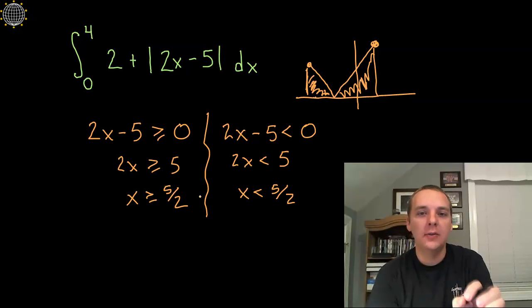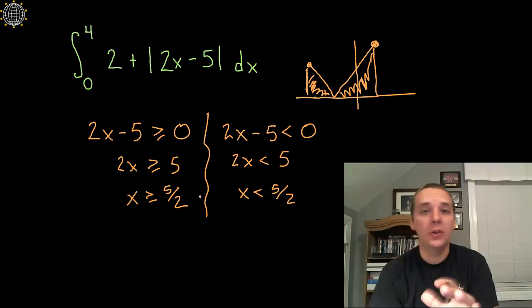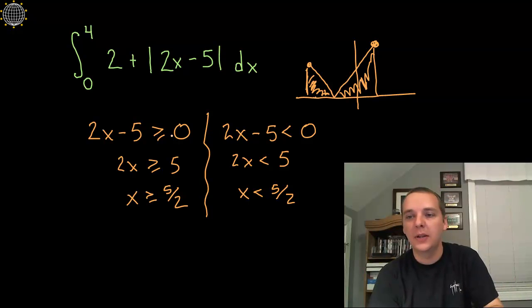Just knowing that the vertex is at 5 halves doesn't really tell us which, basically what to do with your new integrands, and so these will become more clear and I'll explain that in just a second.